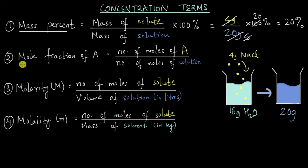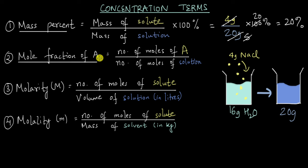Now the second term is mole fraction. The mole fraction of A — which can be the solute or the solvent — is the number of moles of A divided by the total number of moles in the solution. Let's do this calculation for our NaCl example.